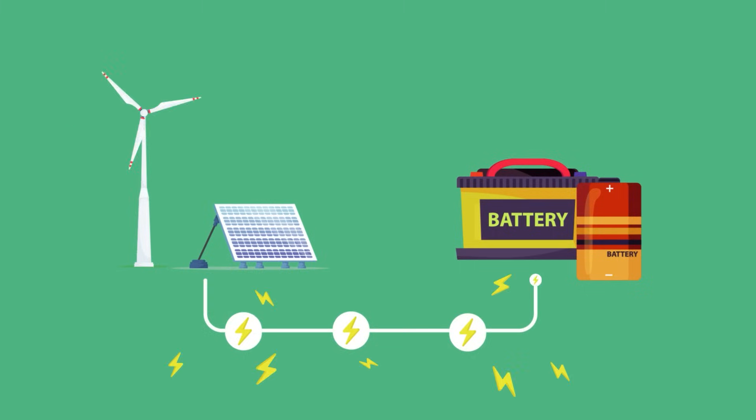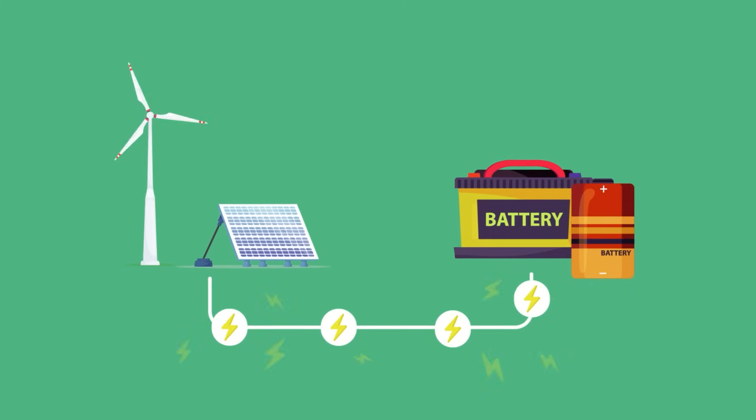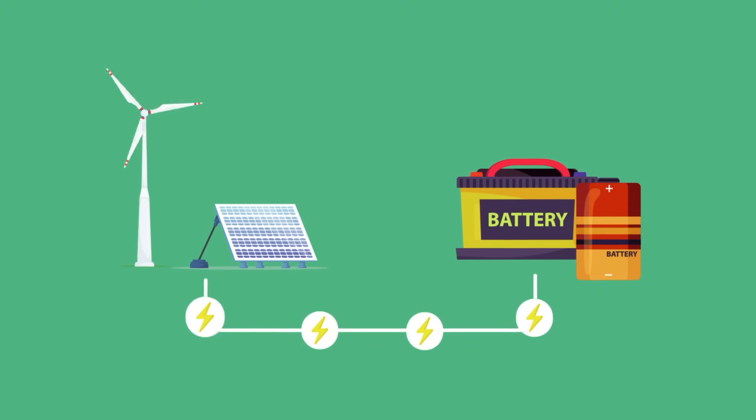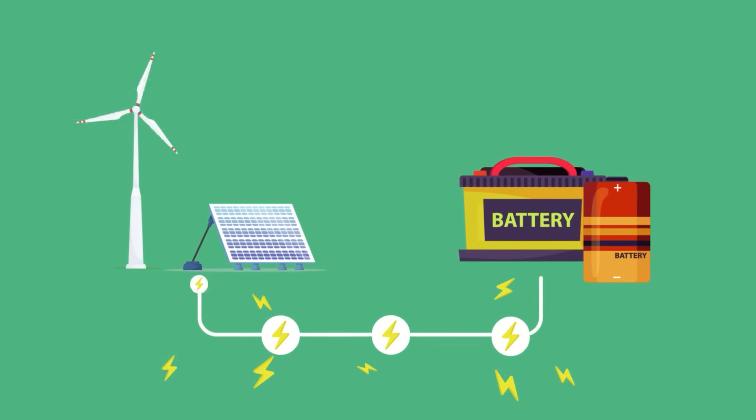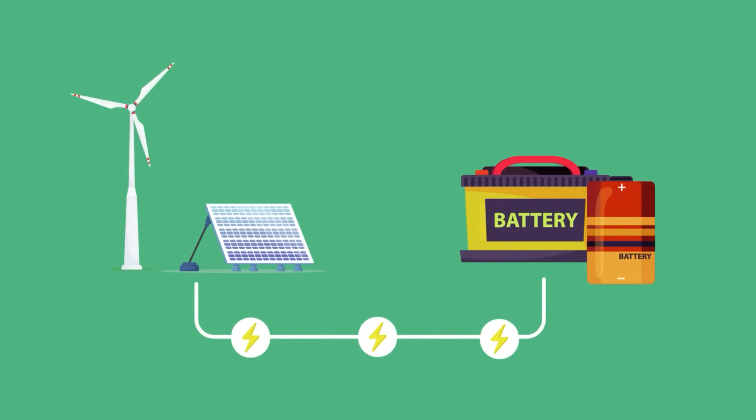However, some energy will be wasted in the conversion from electrical alternating current to direct current energy, and from electrical direct current energy to chemical energy. This necessary energy conversion also increases the complexity of the power system.